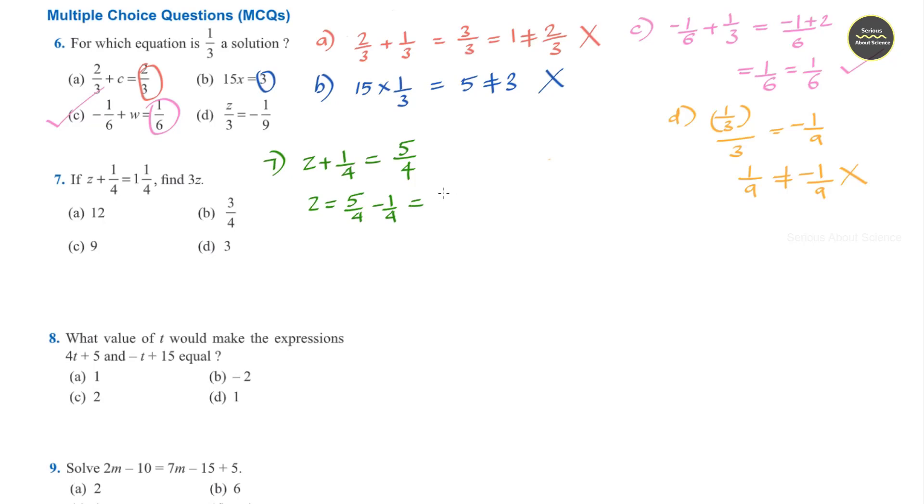Denominators are the same, so I can directly subtract. The answer is 4/4 or it is 1. So we have got the value of z is equal to 1.